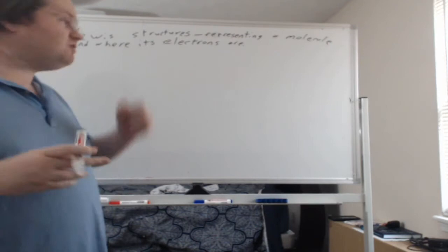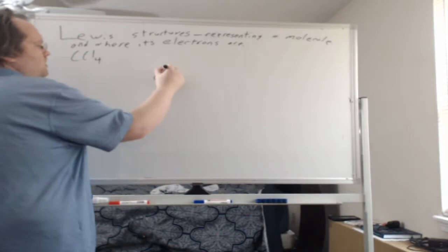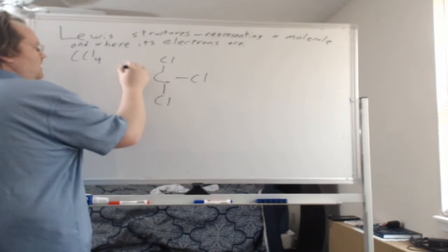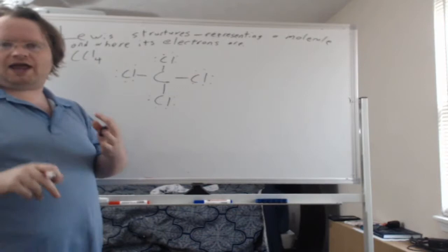So to start with, to actually go over what a Lewis structure is, I'm going to start by drawing one and then I'll tell you what I did, where this came from. So I'm going to look at the molecule CCl4. And I'm going to explain what everything represents and then where I got this from. So CCl4 is a molecule that has five atoms, one carbon atom, four chlorine atoms.